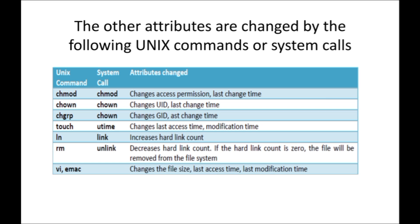VI or EMAC changes the file size, last access time, and last modification time. If you want to change these attributes, you can use this UNIX command VI or EMAC. So these are all the attributes — file size, file type, GID, UID — that are supported in the UNIX and POSIX operating system. If you have any doubts, please post them in the comment section. Thank you for watching the video.